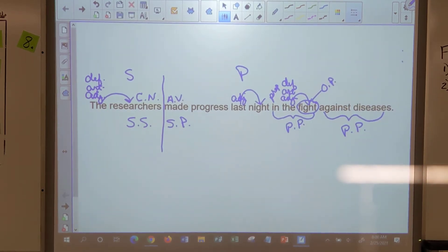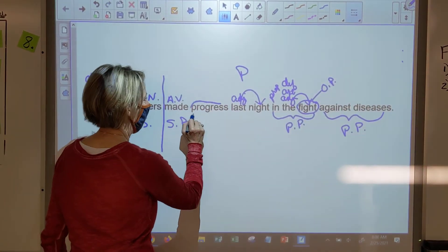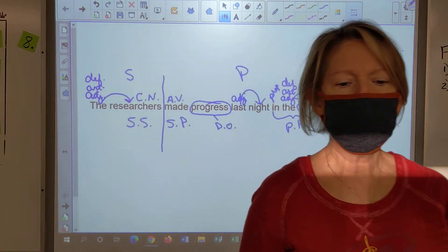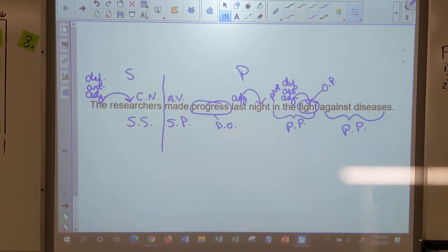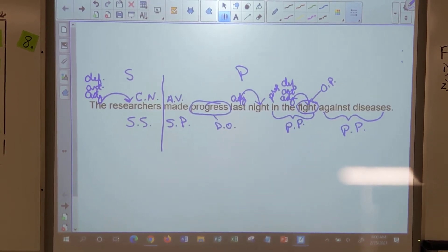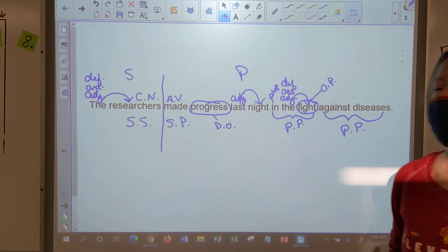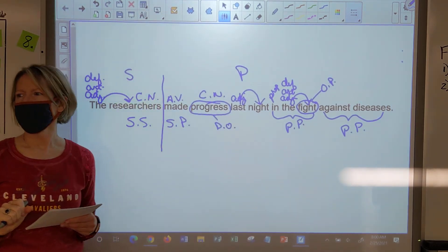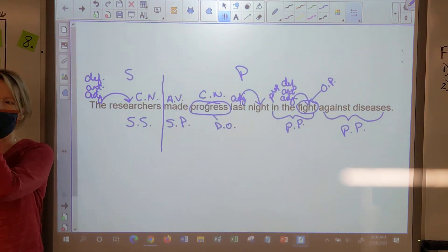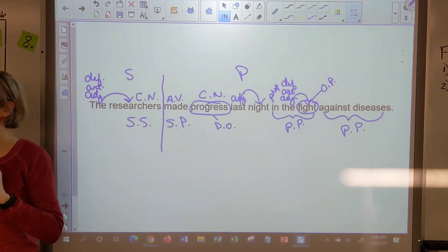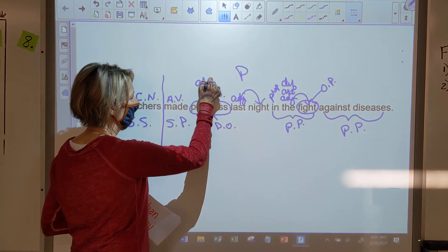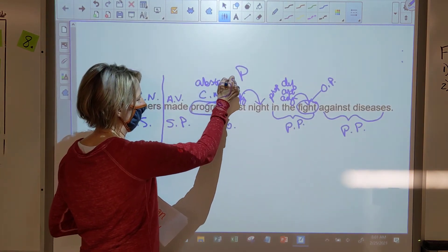Gus? Progress would be the direct object. Progress is the direct object. Thank you Gus. Very good. Progress is a common noun. What other kind of noun is this? It's an abstract noun. It's not a tangible object, it is intangible, therefore it is abstract.